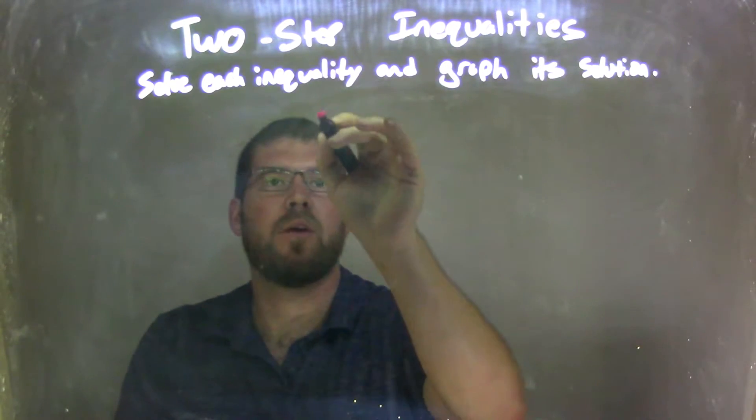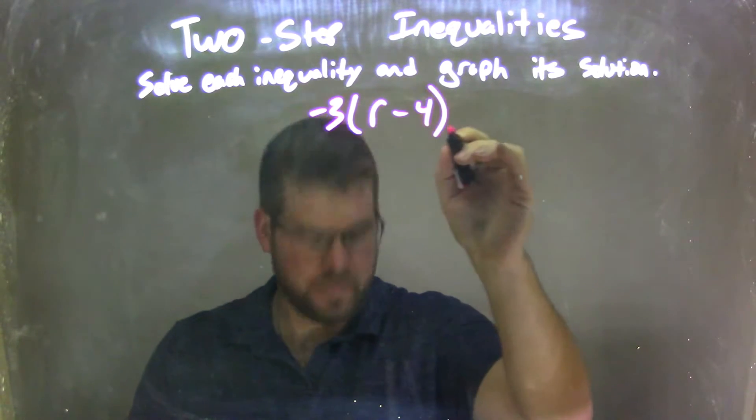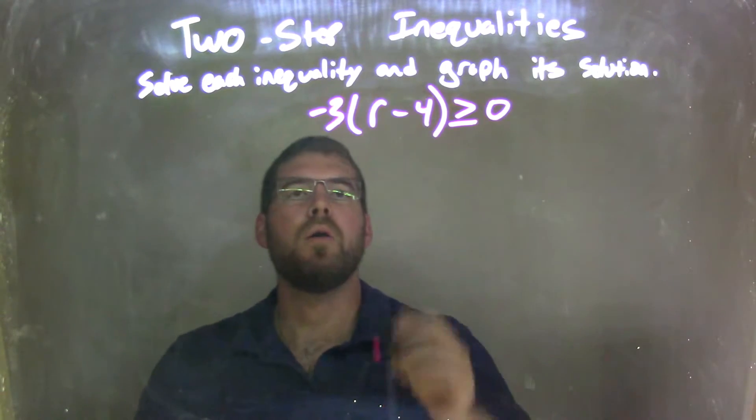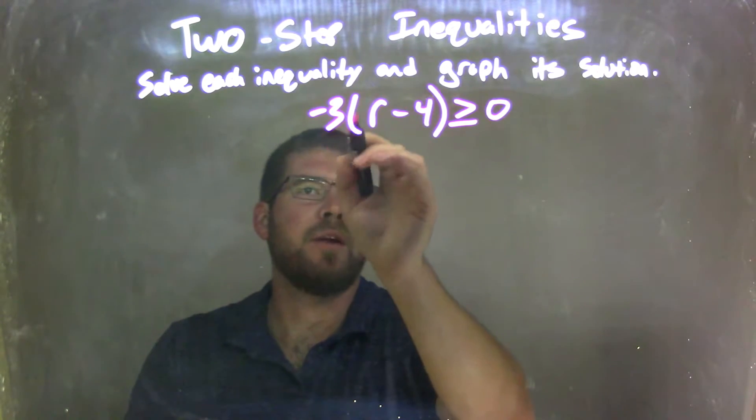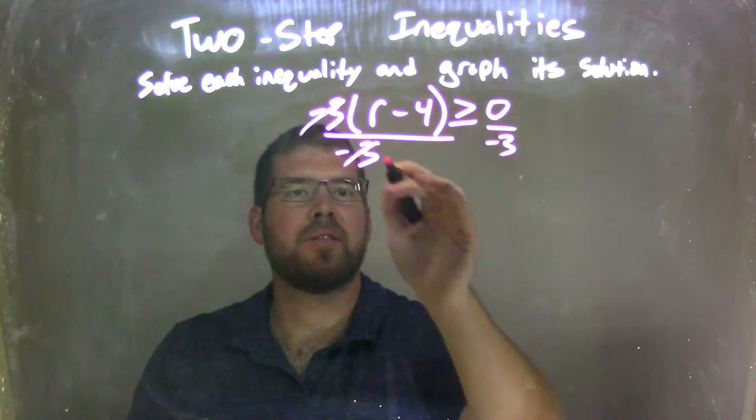So if I was given this inequality, negative 3 times r minus 4, which is greater than or equal to 0... Well, I need to get rid of that negative 3. So I'm going to divide both sides by negative 3. And in doing so, I can cancel the negative 3s over here.